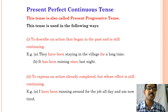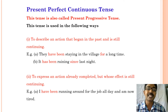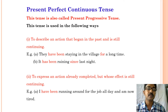Now let us see the present perfect continuous tense. This tense is also called the present progressive tense. This tense is used in the following ways.